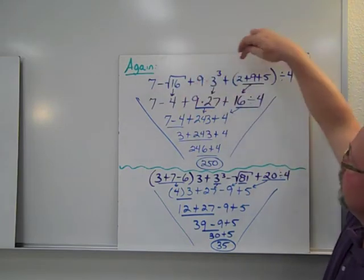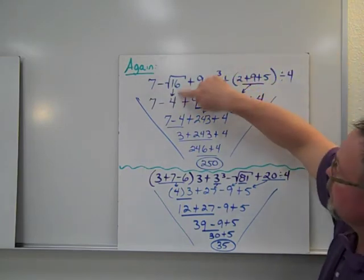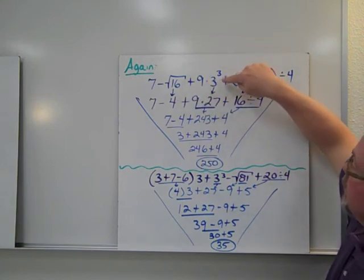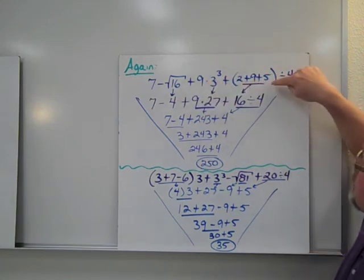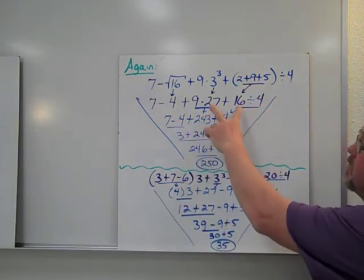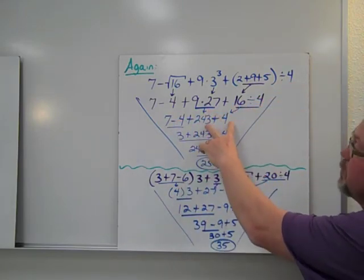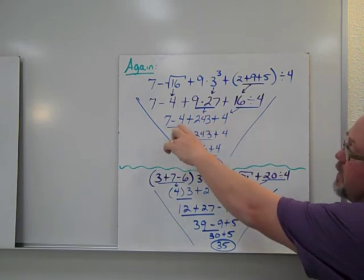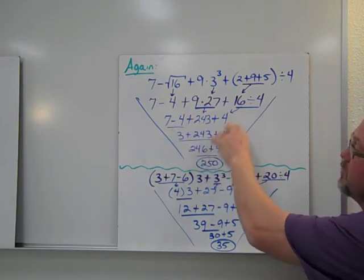So whatever I don't use, I'm going to bring down. So I've done my square root of 16. I've done my 3 cubed. I've done my 2 plus 9 plus 5 in parentheses. I still got to take care of the multiplication division. Again, I can take care of this in this part here. So I get 7 minus 4 plus 243 plus 4.